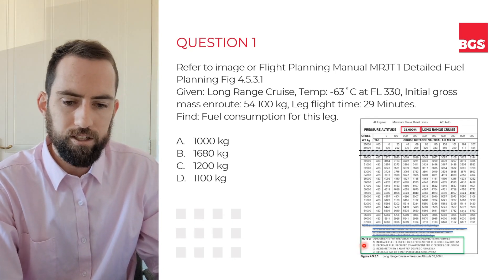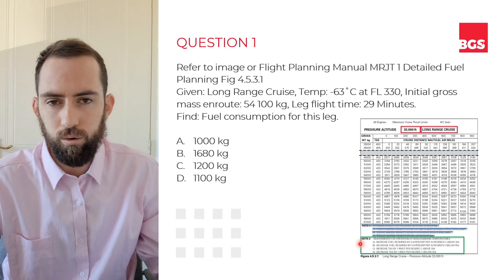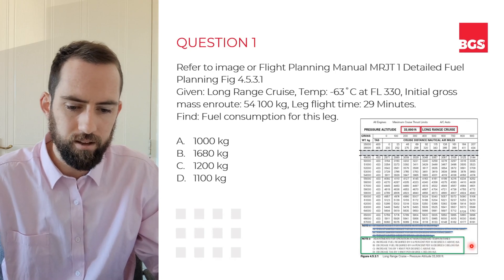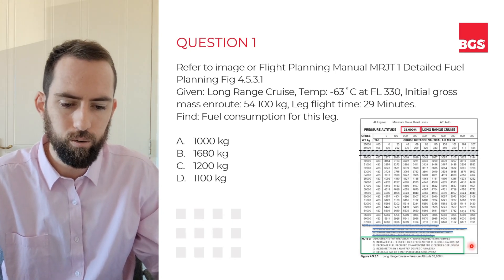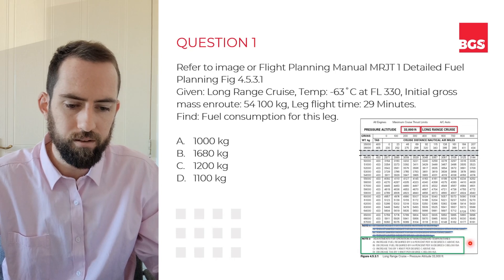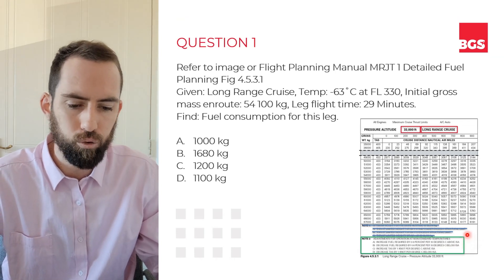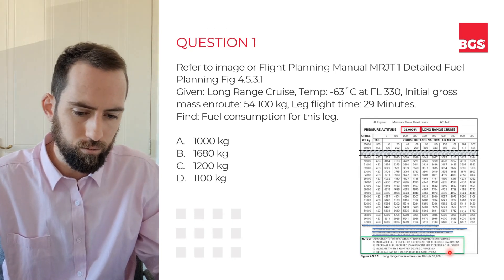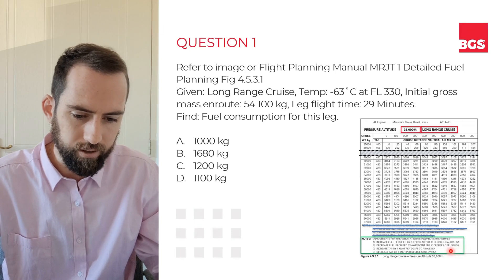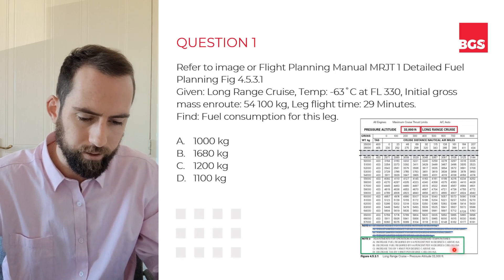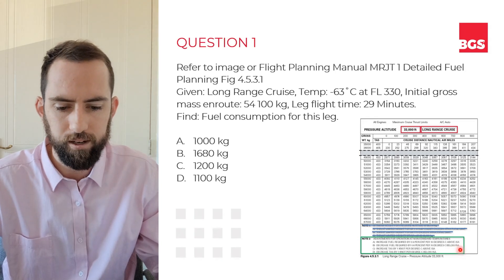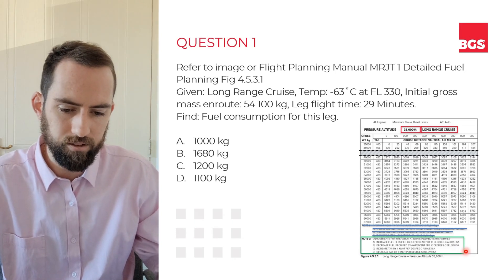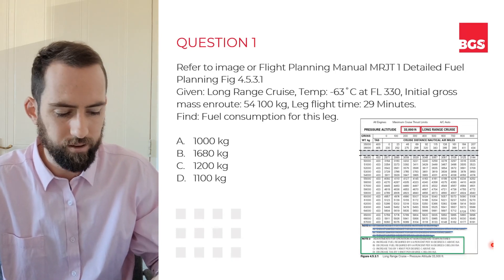There are two corrections that we would need to make during the course of this calculation. We need to either increase or decrease the fuel required by 0.6% per 10 degrees above or below ISA. And we need to increase or decrease the true airspeed by one knot per degree above or below ISA. So keep in mind that there are two corrections to be made.